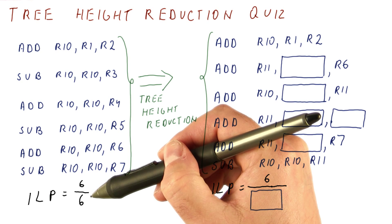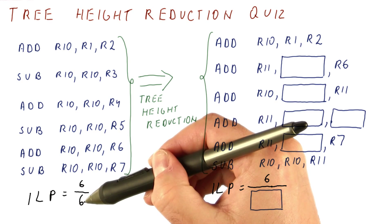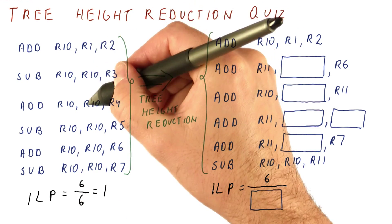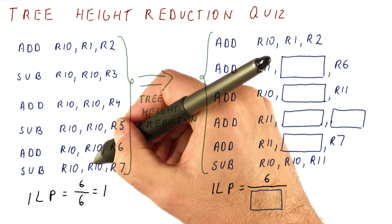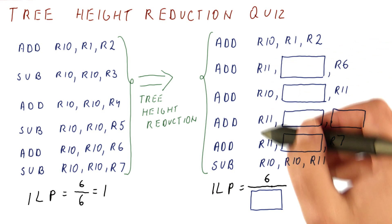And also, the ILP here is clearly six cycles for six instructions, which gets us A1. Why? Well, because each of the instructions depends on the previous one. With your new tree height reduced code,